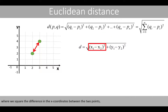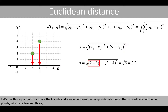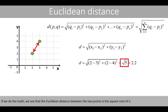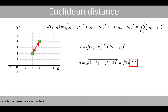In two dimensions, we square the difference in the x-coordinates between the two points and add that to the squared difference between the corresponding y-coordinates. Using this equation to calculate the Euclidean distance, we plug in the x-coordinates of the two points, which are 2 and 3, and the y-coordinates, which are 2 and 4. The Euclidean distance between the two points is the square root of 5, which is approximately equal to 2.2.